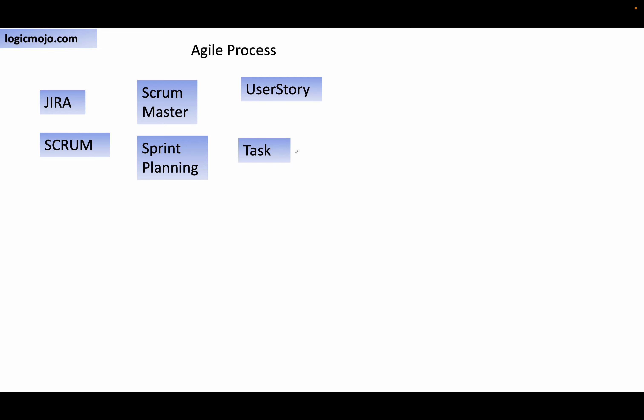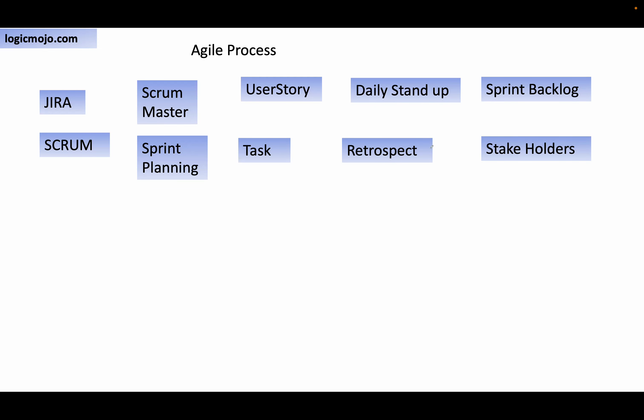Then we have sprint planning, user story, task, daily standup, retrospect, and sprint backlogs. We also have stakeholders. These are the key terms frequently used in the agile process.